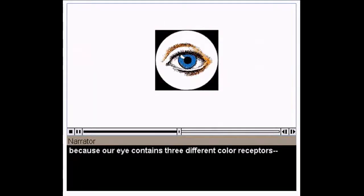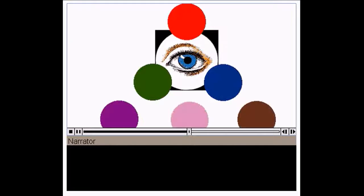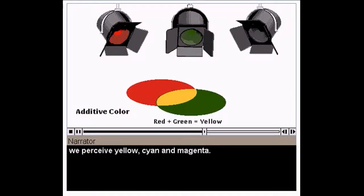We are able to see colors because our eye contains three different color receptors: red, green, and blue. When these receptors are stimulated, our eye can perceive all colors. When color receptors are stimulated in pairs, we perceive yellow, cyan, and magenta.